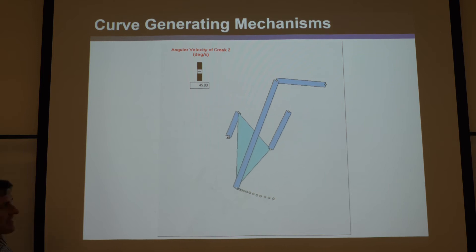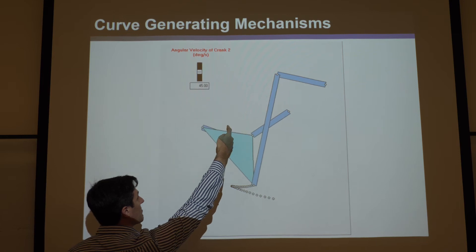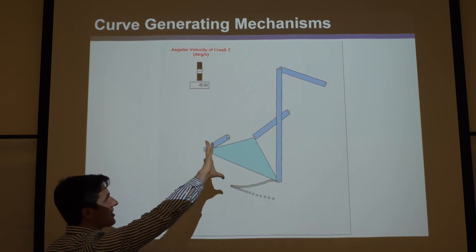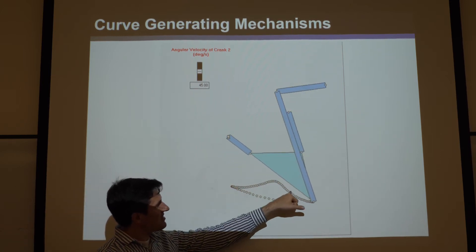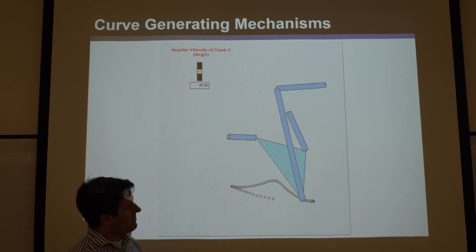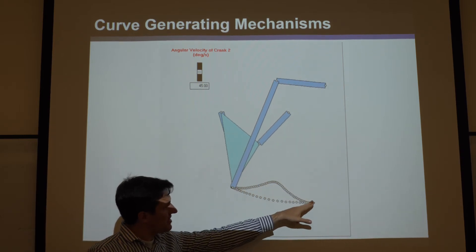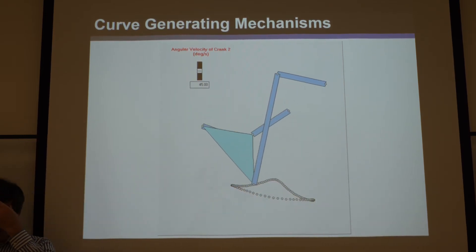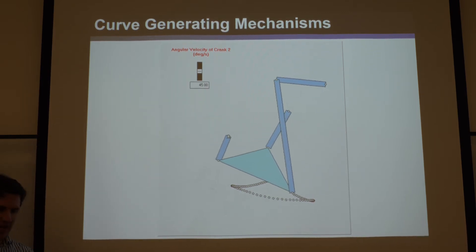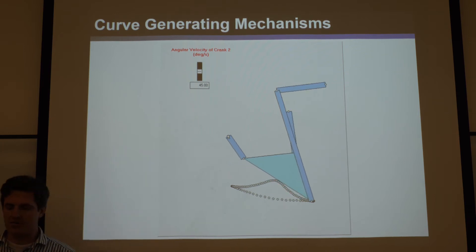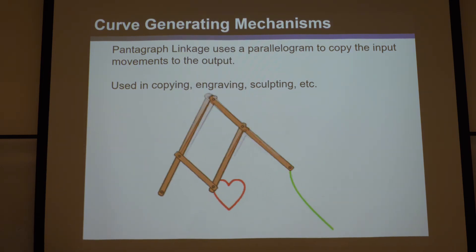Other mechanisms take continuous rotation of a motor arm and trace a very complex path — if you put a pen at a specific point, it draws an interesting curve at variable speeds, doing part of the path slowly and part very quickly. You sometimes see these in museums with a pen attached drawing cool patterns. These are called curve-generating mechanisms.